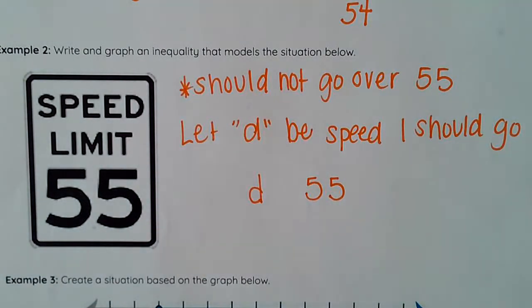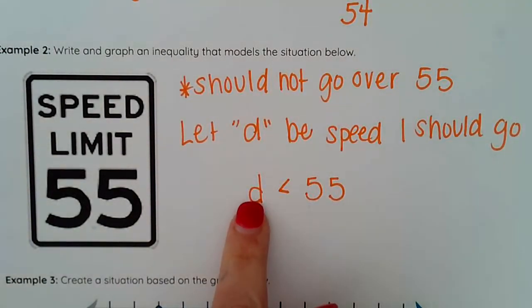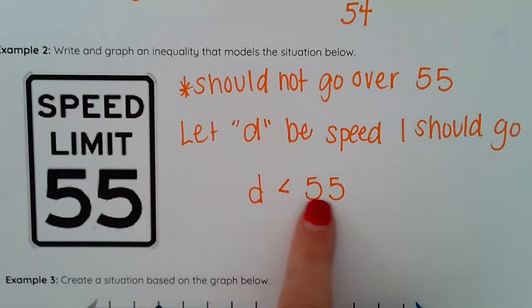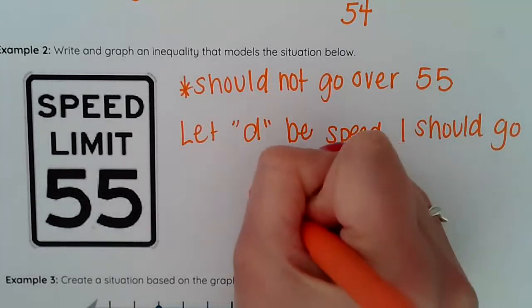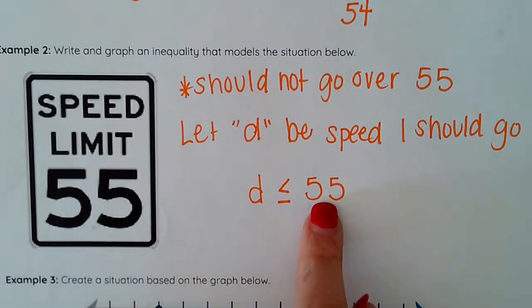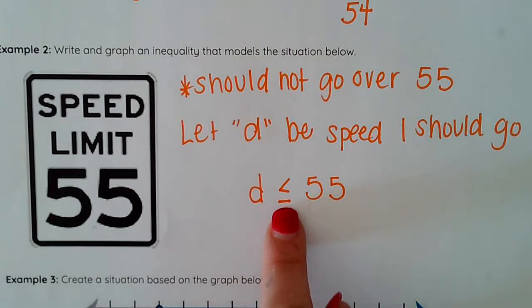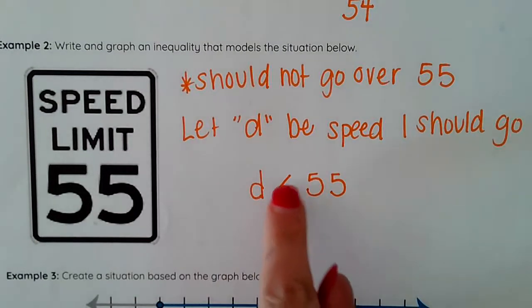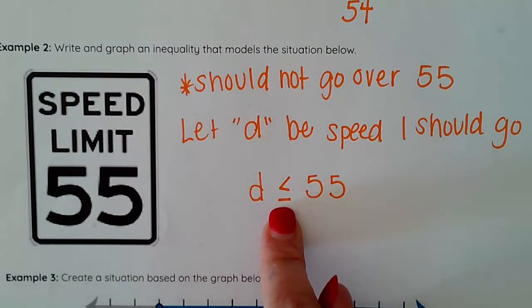Now I need to determine if I want to be going more than 55 or less than 55. Well I shouldn't be going over 55. If I go greater than 55 then that is opening up doors for me to get a ticket. So I need to be going less. So my speed should be less than 55 but I can go 55. So 55 is an acceptable solution. So D is less than or equal to 55. My speed should be less than or equal to 55.